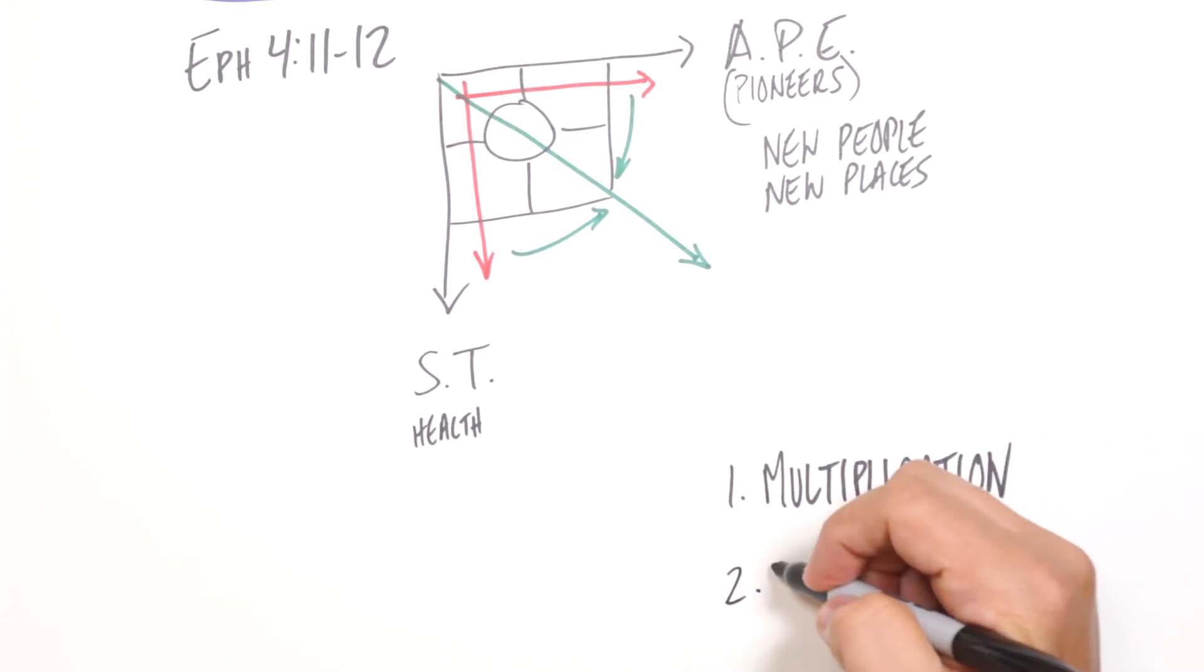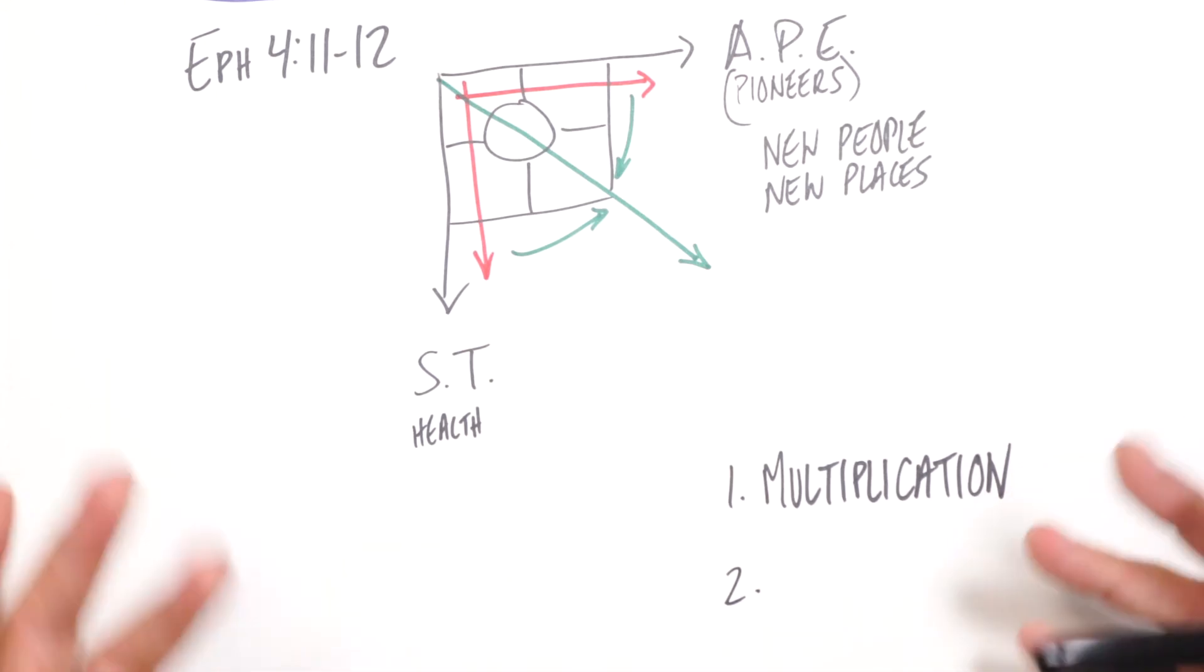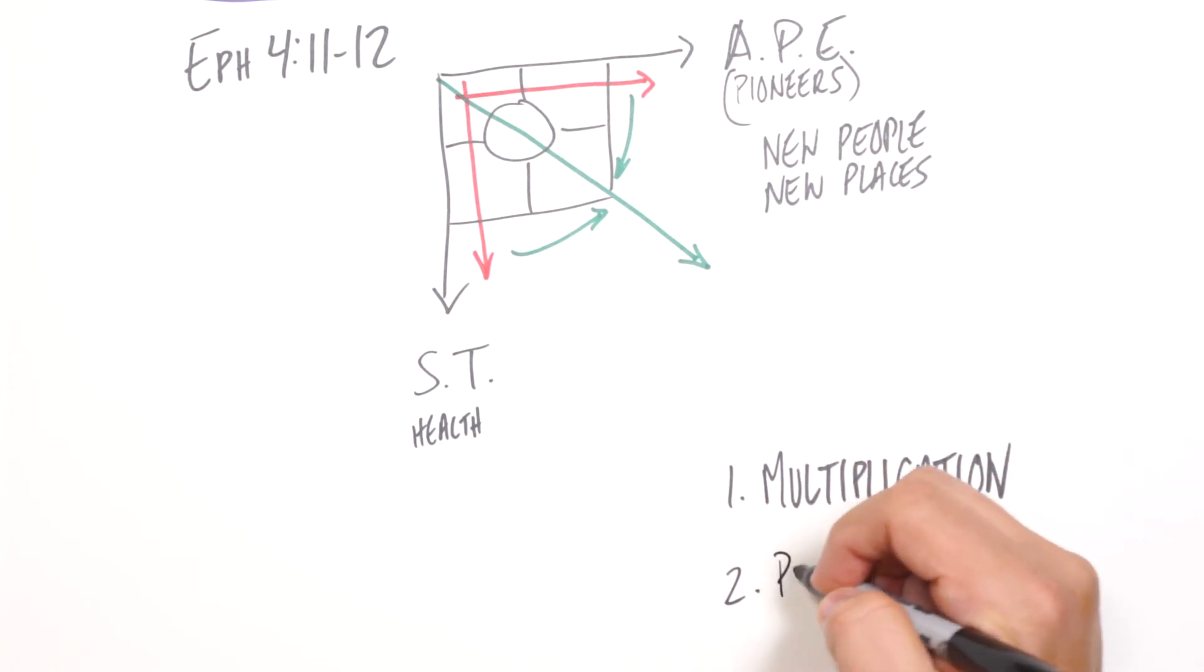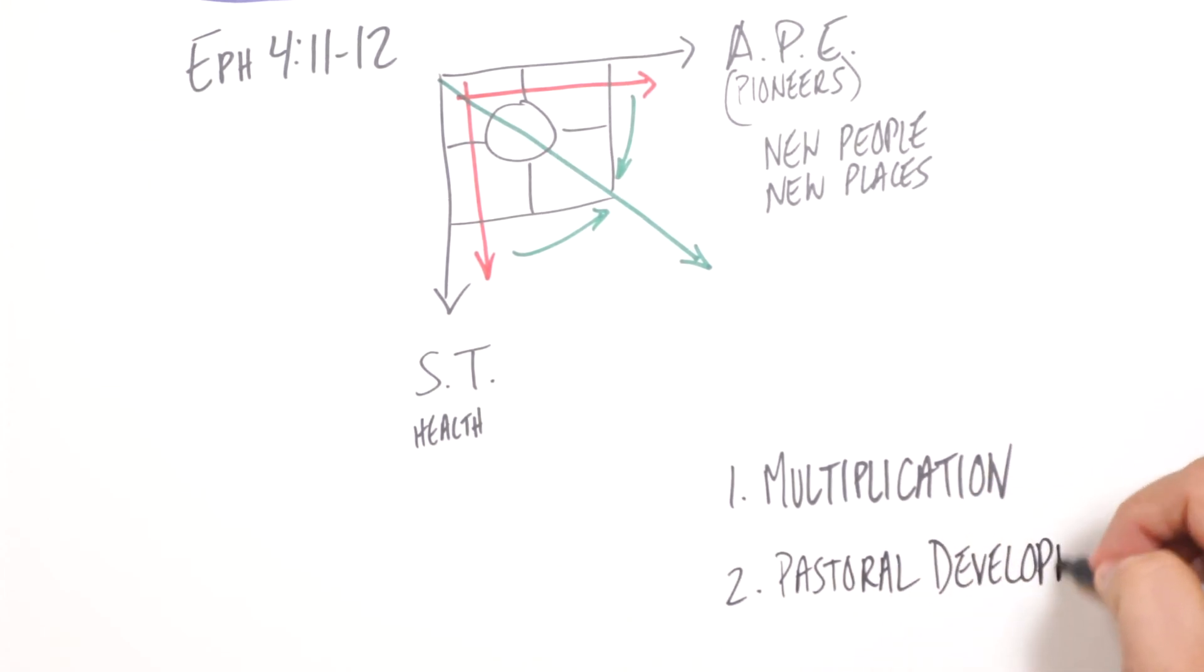And then phase two, as we're seeing disciples and churches multiply, if it's going to be a healthy movement, we need pastors, we need shepherds. And especially as we're pioneering in new areas, we noticed in Acts 14 that the elders were found in the harvest. They appointed elders in these new churches. So if that's going to happen in new areas, we're going to need some pastoral development, some pastoral training.